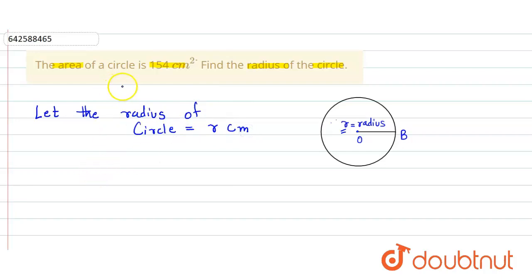So here we use the formula for the area of the circle. Area of circle is given by π r squared, where r is the radius.